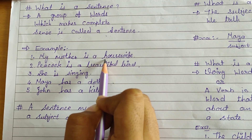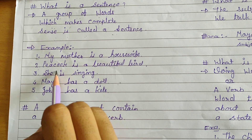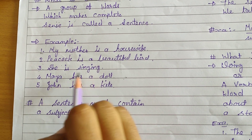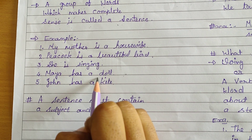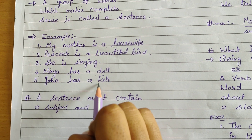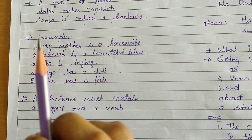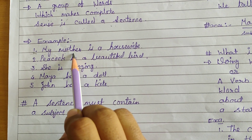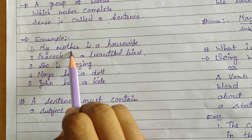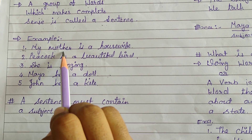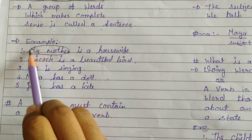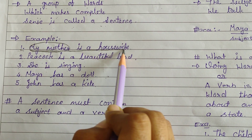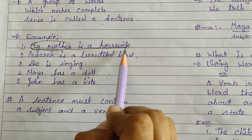First: My mother is a housewife. Second: Peacock is a beautiful bird. Third: She is singing. Fourth: Maya has a doll. Fifth: John has a kite. Can just 'my mother' alone be a sentence? No, because it is incomplete — only 'my mother' is incomplete. But if I say 'My mother is a housewife,' that is a meaningful sentence.